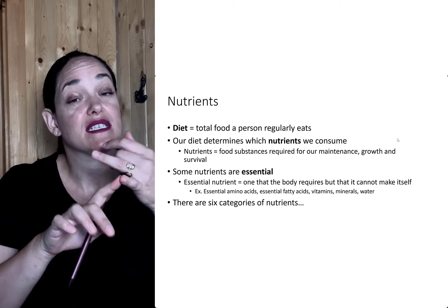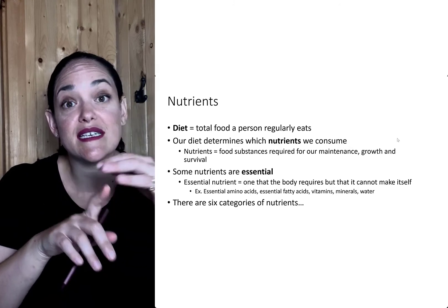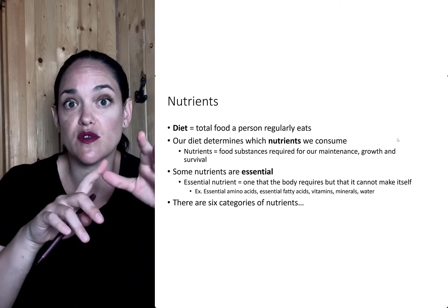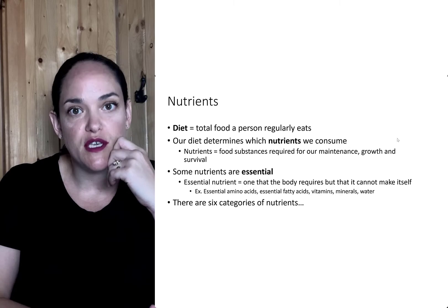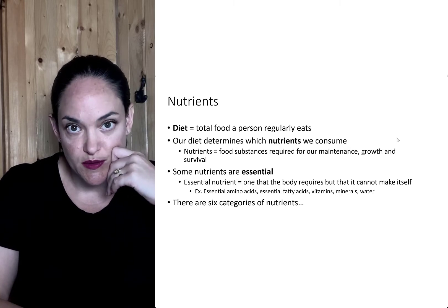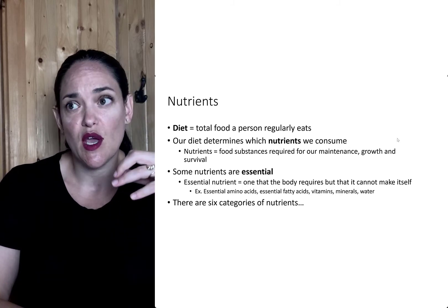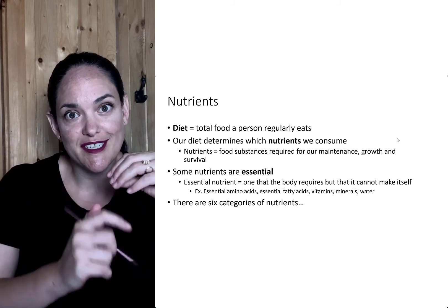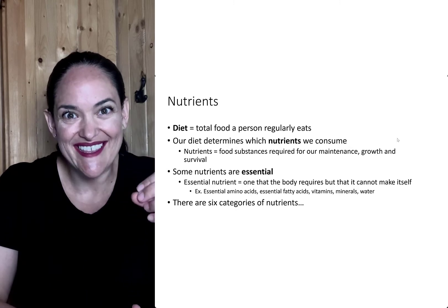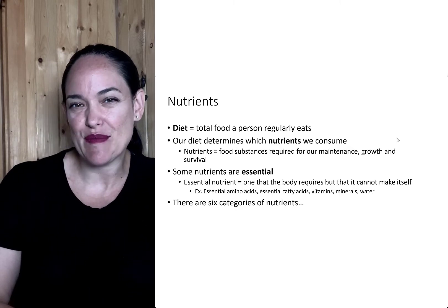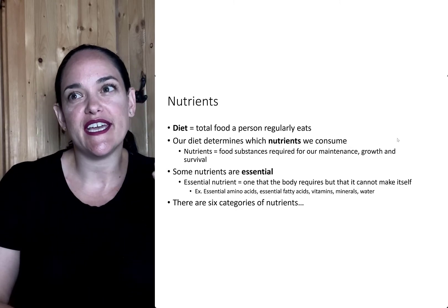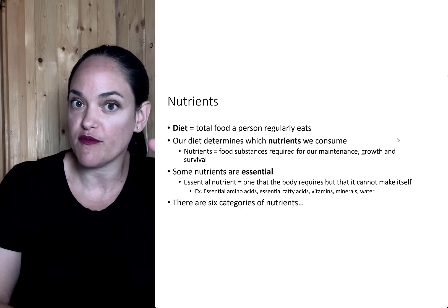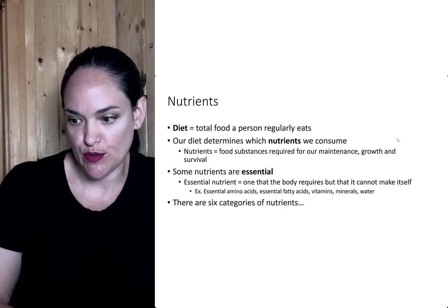Examples of essential nutrients are essential fatty acids, essential amino acids, vitamins, minerals, and water. These are all essential. Some other nutrients we might consider non-essential. It doesn't mean that our body can't use them or they're not important — it's just that they're less important as far as consuming them from the diet goes.